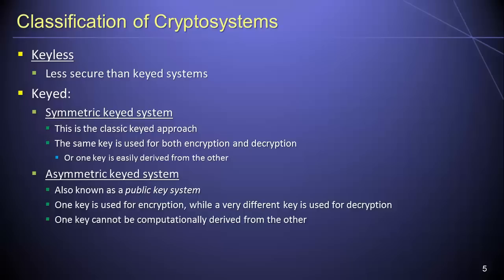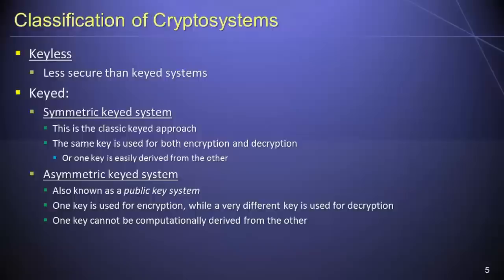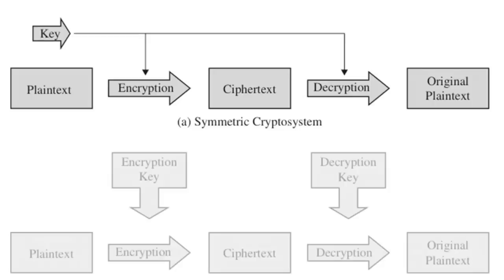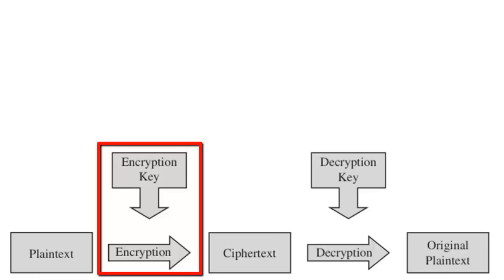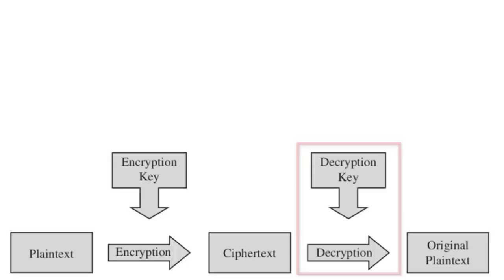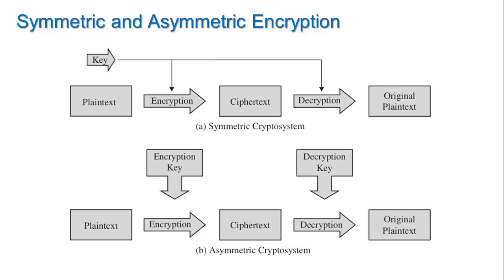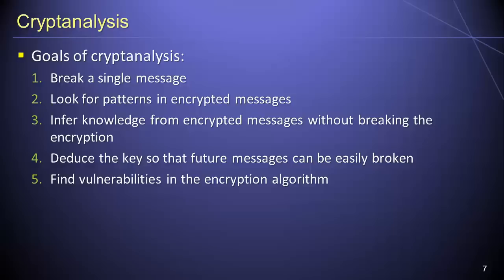Keyed cryptosystems can be further divided into two major groups: symmetric key systems and asymmetric key systems. In a symmetric key system, the same key value is used for both encrypting and decrypting a message. In an asymmetric key system, one key value is used to encrypt a message while a very different key value is used to decrypt it — analogous to needing one physical key to lock your front door and a different key to unlock it. In modern computing, asymmetric key systems are commonly referred to as public key systems.